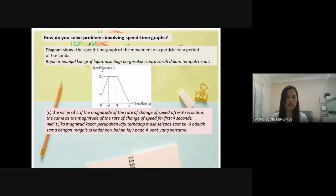Now, we look at C, the value of T. T is here. If the magnitude of the rate of change of speed after 9 seconds is the same as the magnitude of the rate of change of speed for first 4 seconds.